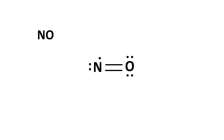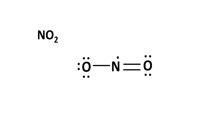In Nitric Oxide, Nitrogen has 7 electrons while Oxygen has 8 electrons, so in total the molecule has 11 electrons. The second compound is Nitrogen dioxide, NO2. Nitrogen is the central atom and has 7 electrons, and both Oxygen terminal atoms have 8 electrons each. Overall, Nitrogen dioxide as a molecule has 15 electrons.